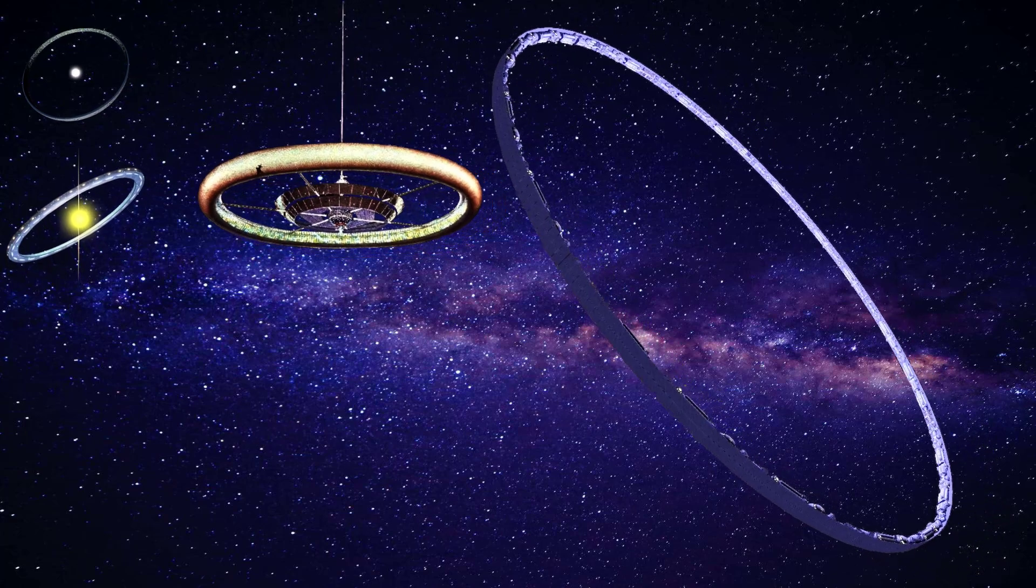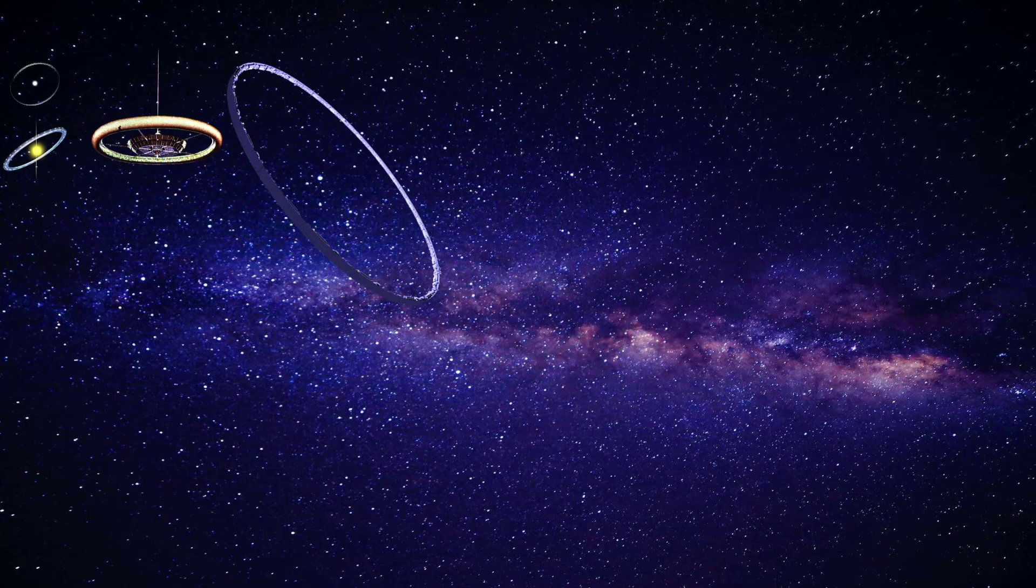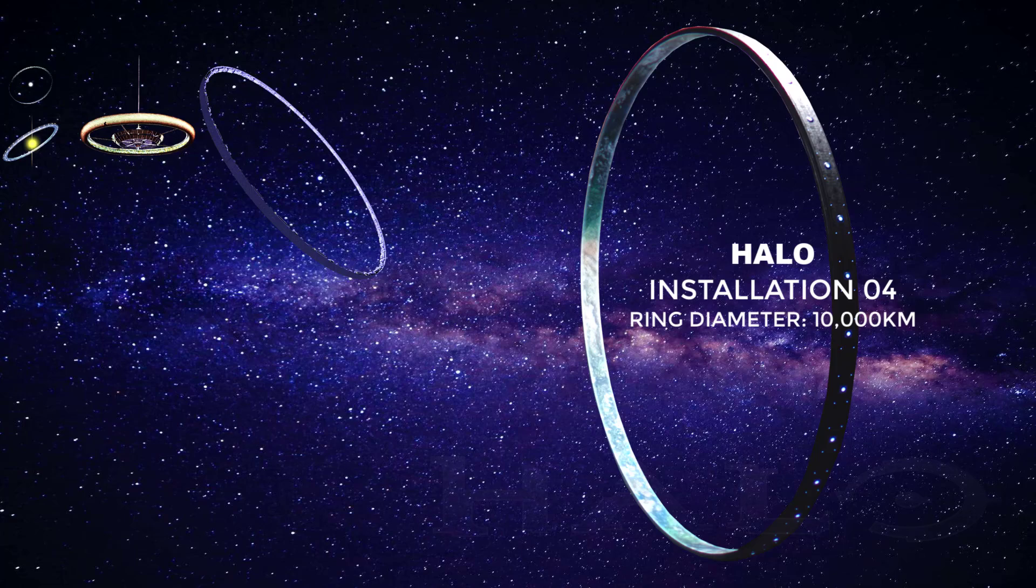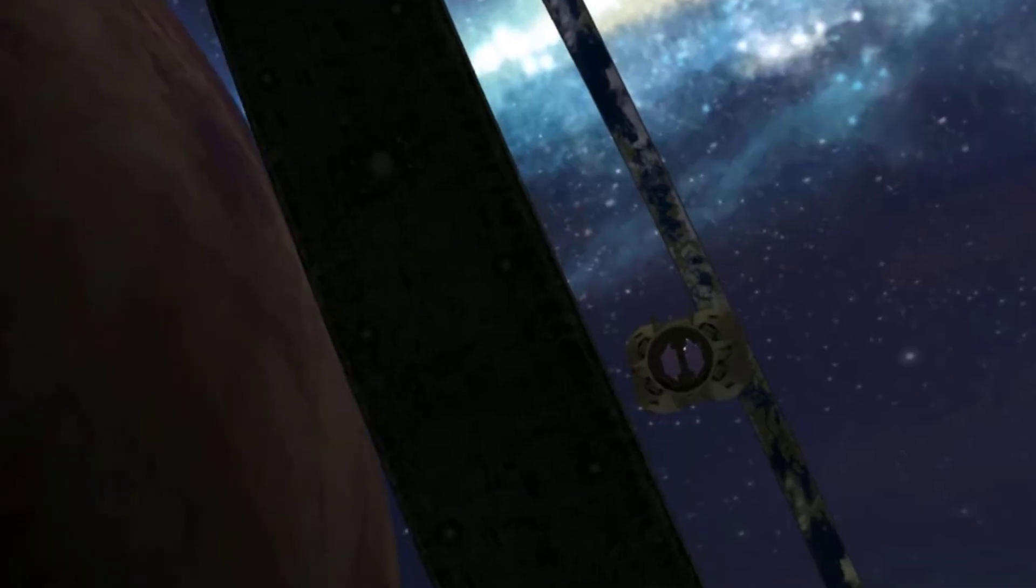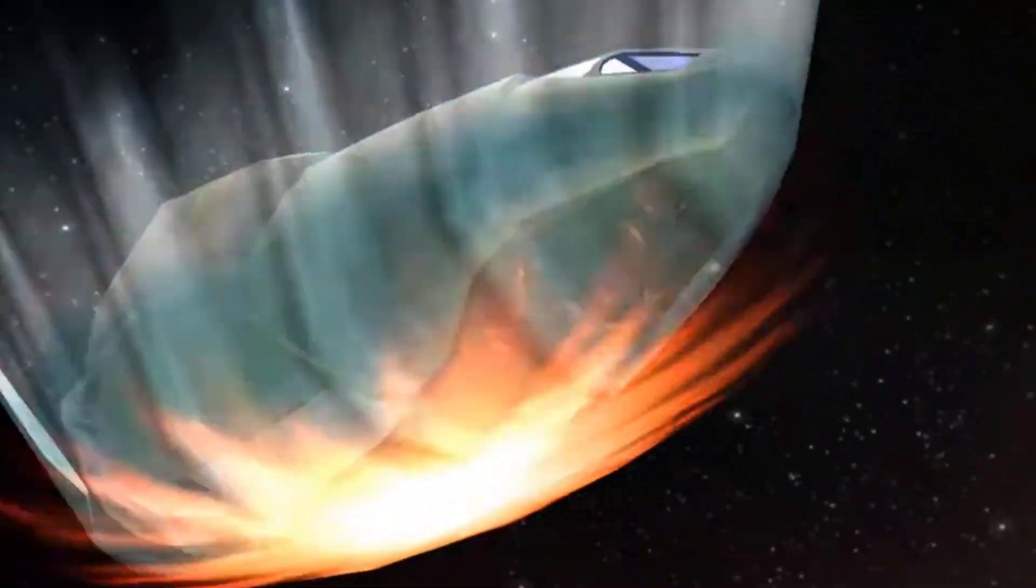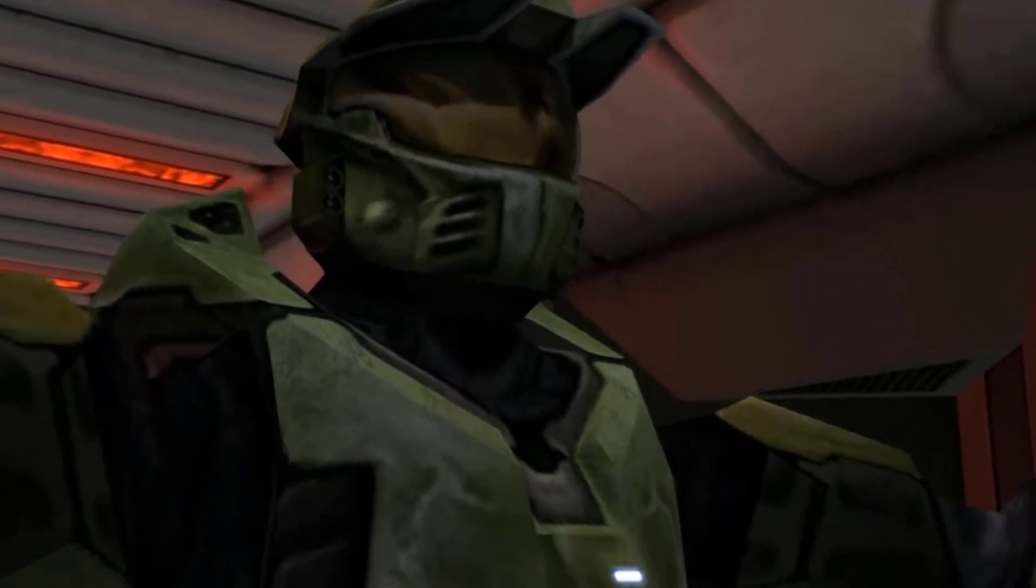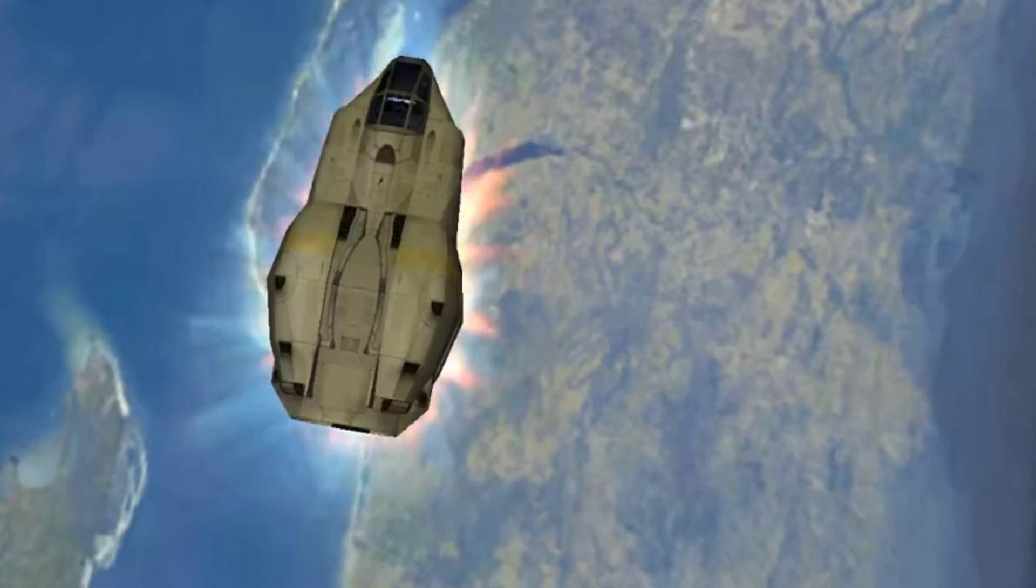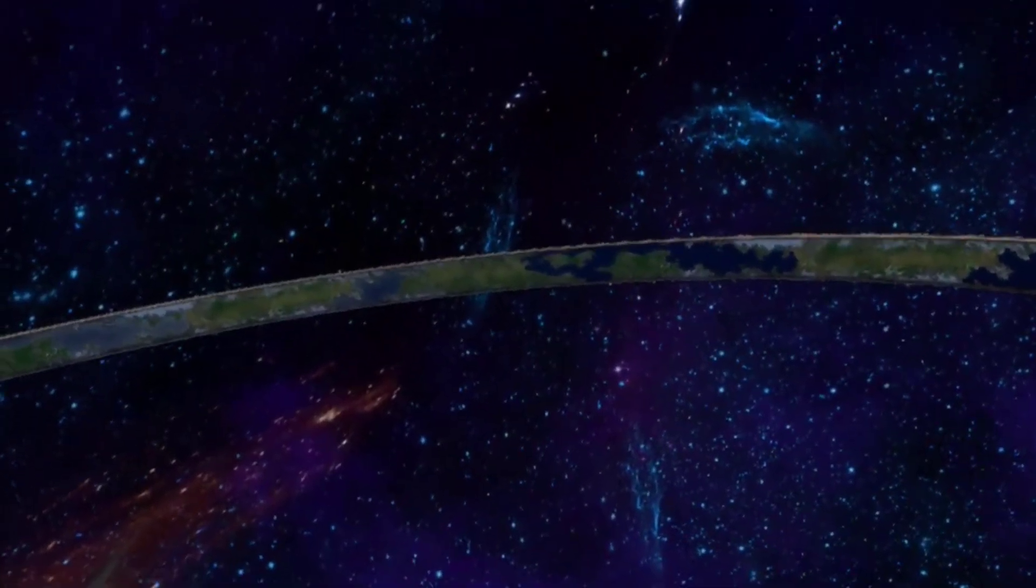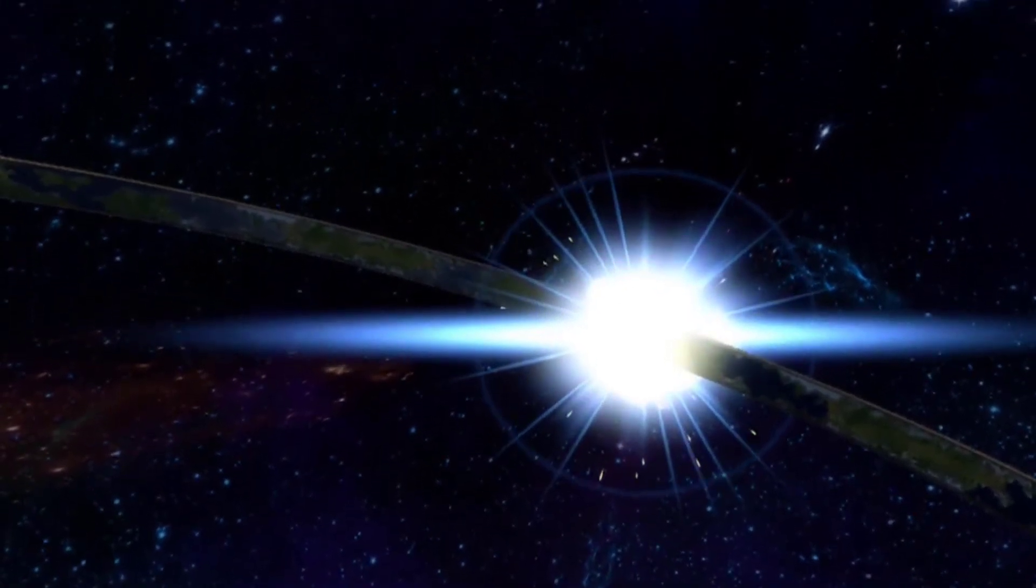Now going up in scale, we have the most famous ringworld in fiction by far and this was seen in the Halo games. The very first of these and the namesake of the series of games is of course Installation 04, Halo, which is one of seven gigantic ring-shaped megastructures known collectively as the Halo Array. Measuring about 10,000 kilometers in diameter, this ringworld was constructed by the ancient forerunner species. And although it has a very beautifully detailed inner surface with artificial gravity created by rotation,